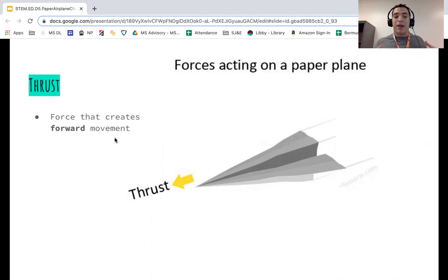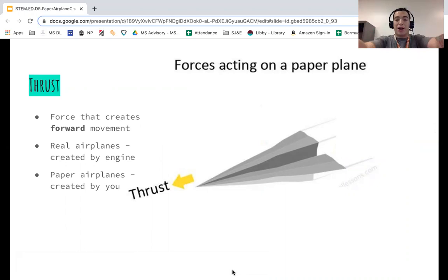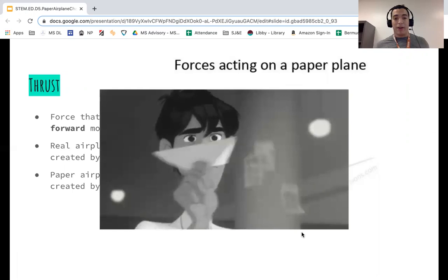So in real airplanes, this is the engine on the side of the wing. But for our paper airplane, it's you. You are throwing it. You are creating the thrust. That's what's going to push your airplane forward. So hopefully you'll have enough thrust, enough power, enough force to really make that paper airplane fly.